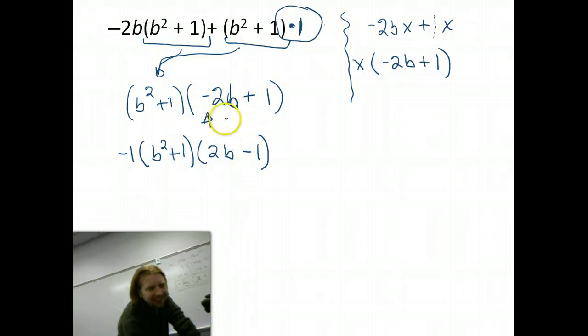Wait. Where's that negative one come from? What'd you divide? I divided out a negative one. That's this negative one over here. Pulling that negative one out of the negative 2b plus one changes all the signs. Because I don't want a negative one on that front end.